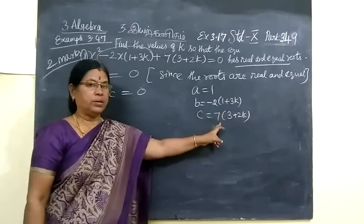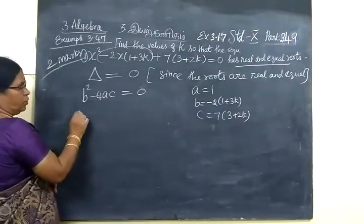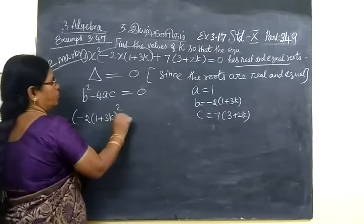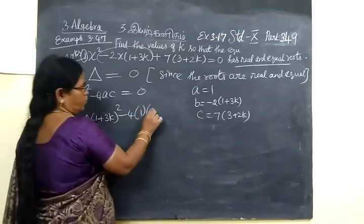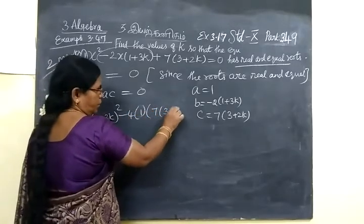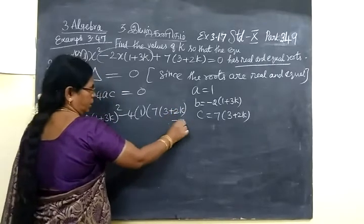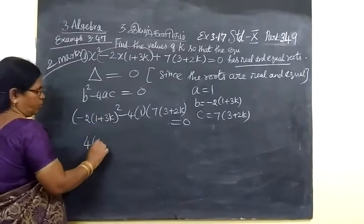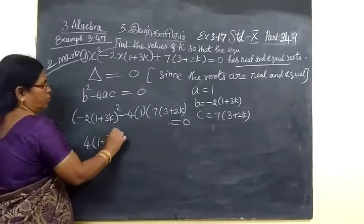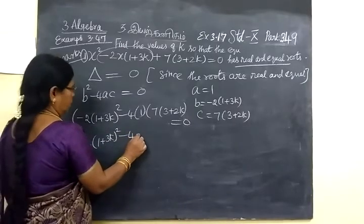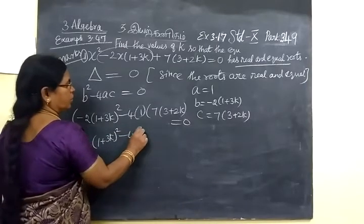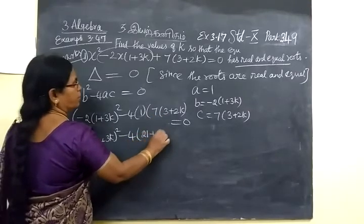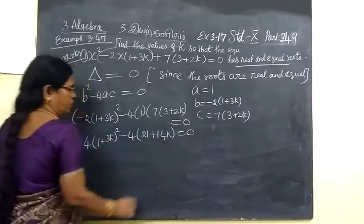Now, you substitute the value. Minus 2(1 plus 3K) whole square, minus 4 bracket, A value 1, then C value 7 bracket (3 plus 2K) equal to 0. If you make it square, 4(1 plus 3K) whole square minus 4. Then, take 7 inside. So 7 threes are 21 plus 7 twos are 14K equal to 0.